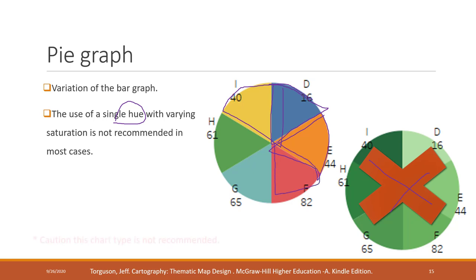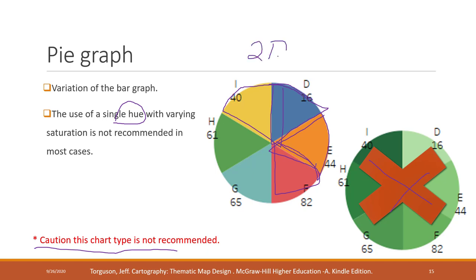One important thing to keep in mind is that the pie graph is actually not recommended. This is because comparing areas is a two-dimensional visual task, and humans tend to underestimate two-dimensional signals. Therefore, the pie graph itself is generally not recommended as a data visualization choice.